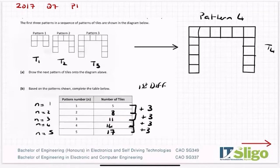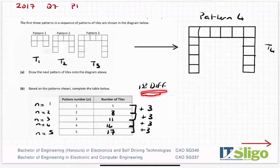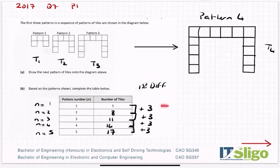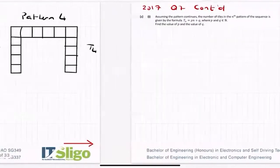This is what's called an arithmetic sequence, when the first difference is the same. If that first difference wasn't the same, I would then check the second difference — which is the difference of the difference — and you can see that in the 2018 question.